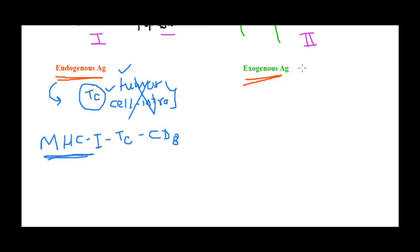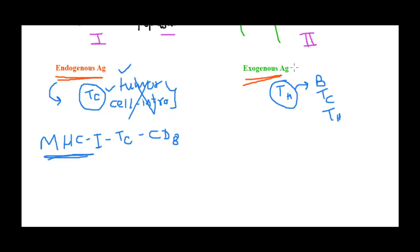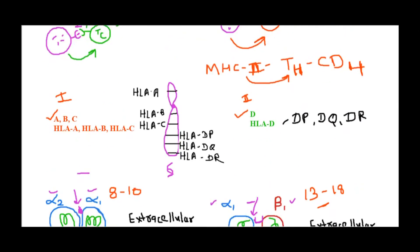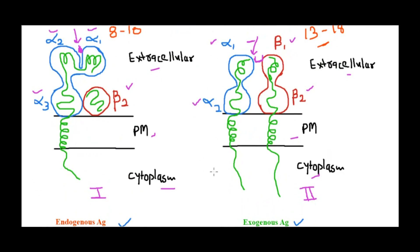MHC class 2 is involved in clearing exogenous antigens because it presents antigen to T helper cells. T helper cells do not show cytotoxicity, but as the name suggests, they call for help — recruiting B cells, TC cells, and additional T helper cells to the site of infection. So because MHC class 2 recognizes the CD4 molecule and presents antigen to T helper cells, it is effective against exogenous antigens.